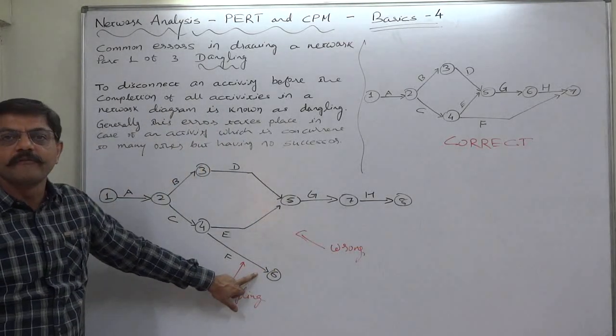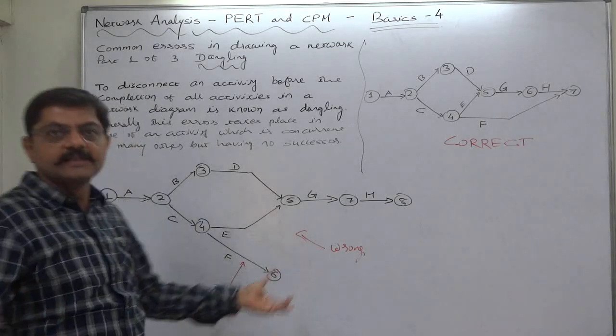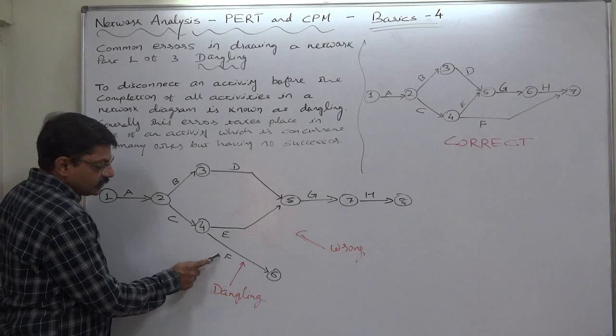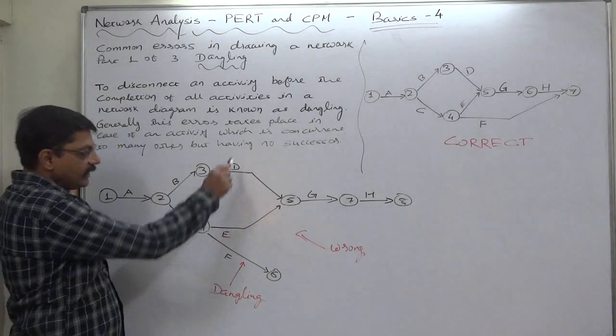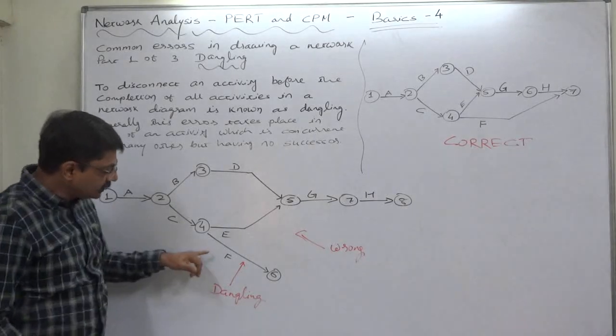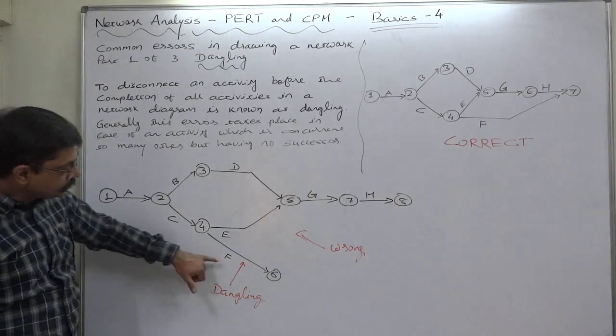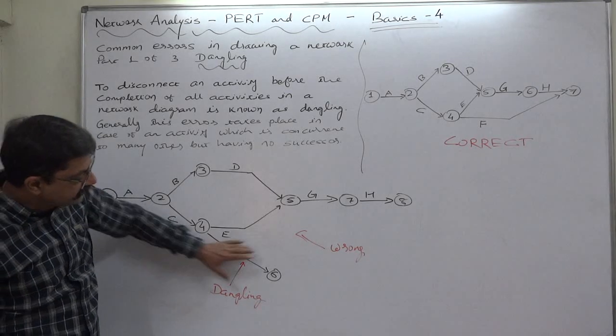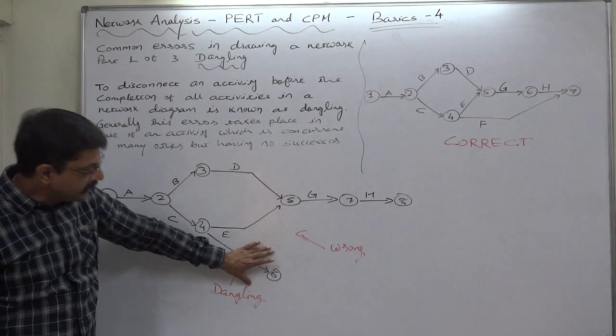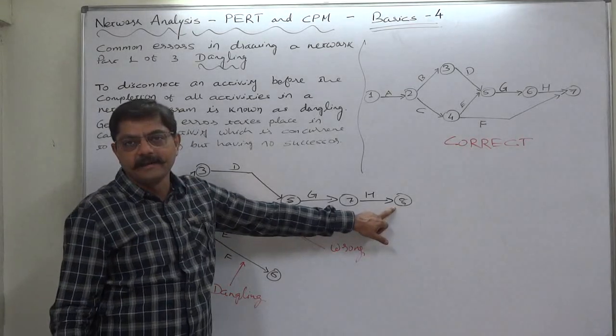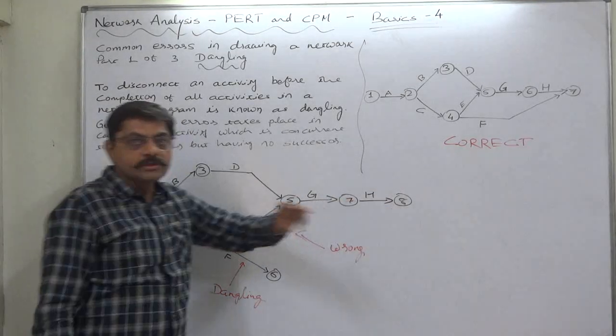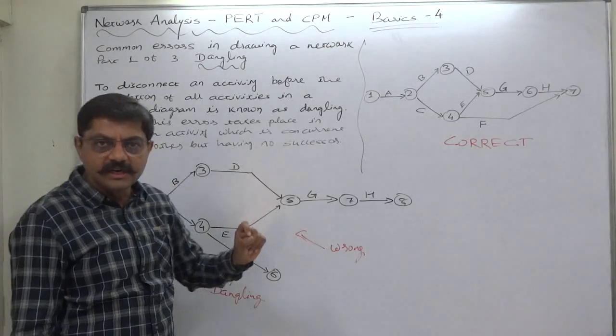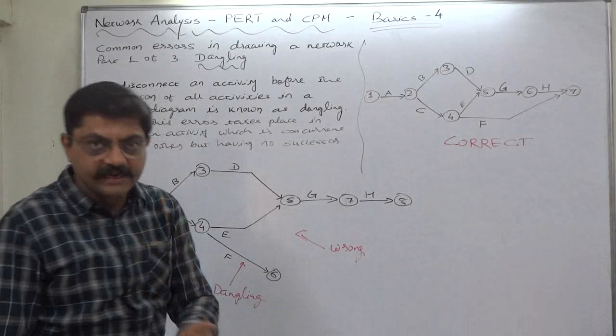...also F ends or has been completed. So this is the situation of dangling. In this particular network diagram, the person who has drawn this diagram should not leave activity F in this way. It should reach its logical end, because the project is not considered finished when only H ends.